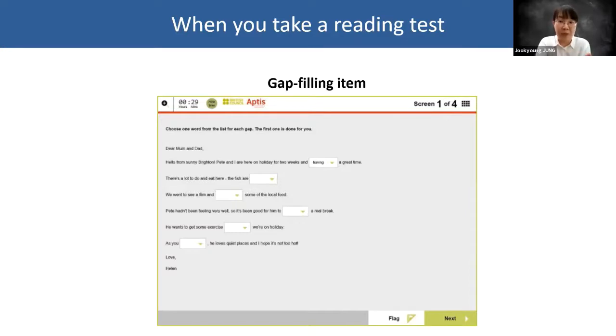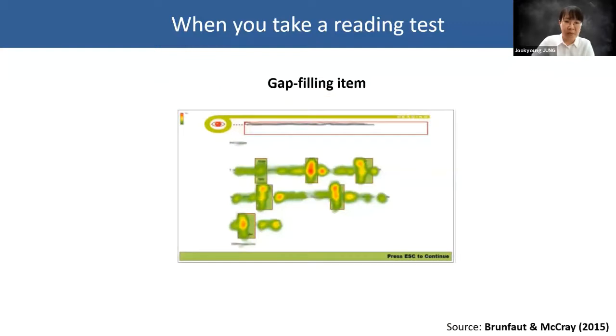In this type of reading comprehension item, a sentence is given with several gaps. You need to fill the gaps by choosing one out of multiple options for each of the gaps. Where do you think you will observe more intensive eye gaze in this type of item? I think the answer is quite obvious, right? On the gaps. So let me show you the eye movement here.